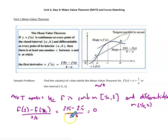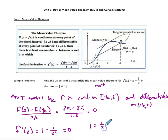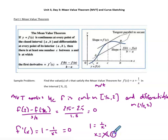The MVT guarantees there must be a spot on (1/2, 2) where the derivative equals 0. Differentiating f(x): x differentiates to 1, and 1/x differentiates to −1/x². Setting f'(c) = 0 gives 1 − 1/x² = 0, so 1 = 1/x², which means x = ±1. Since our interval is [1/2, 2], we discard x = −1, leaving c = 1.